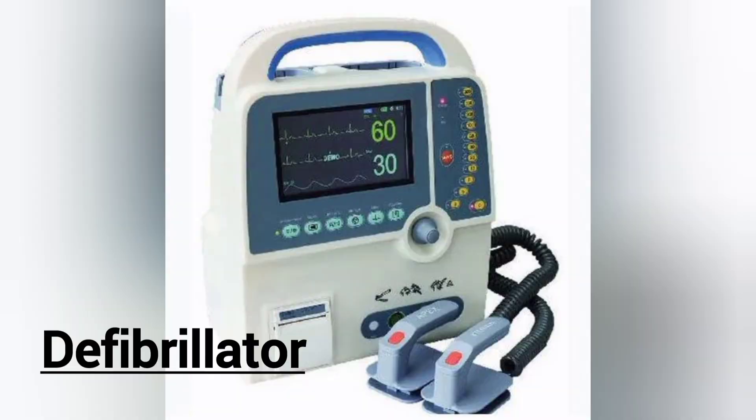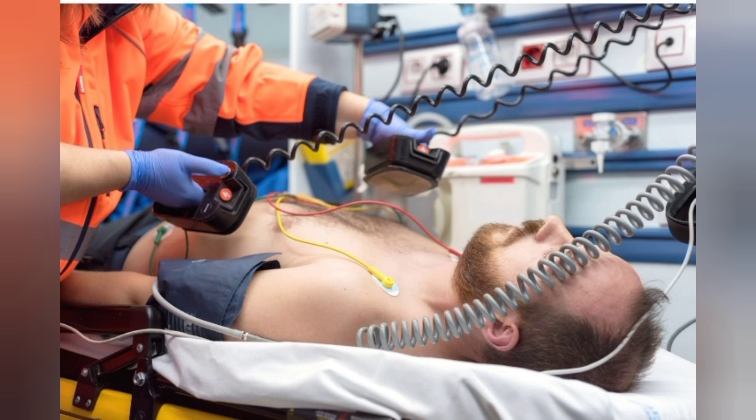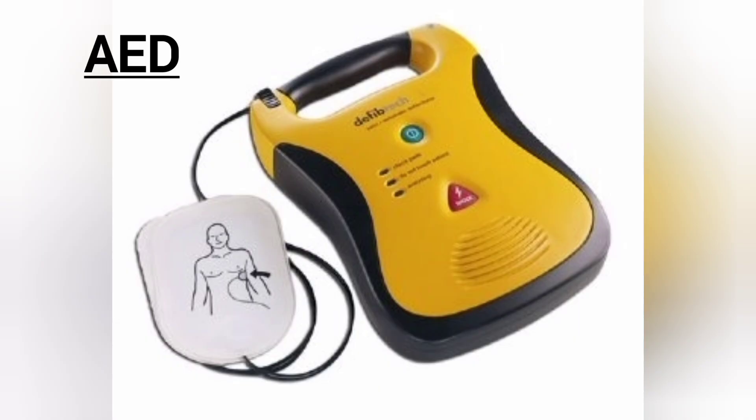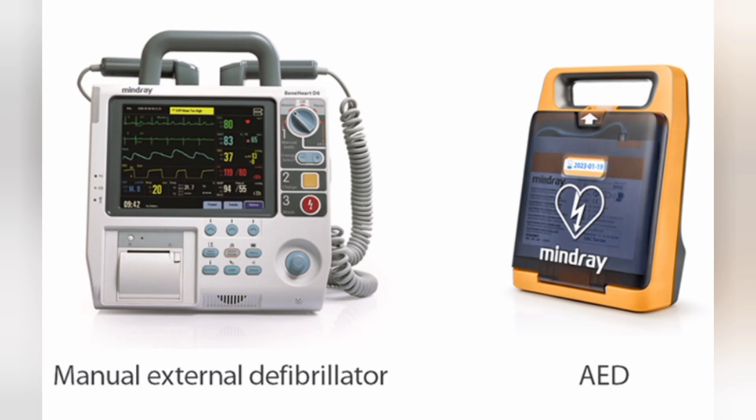Second is defibrillator. Many weak-hearted patients get admitted in ICU. Patients with complications like high BP, kidney failure, trauma, or disturbed metabolism may experience a cardiac arrest. For quick life support, a defibrillator is used to give shock and restore the natural rhythm of the patient's heart. Third is AED — automatic emergency defibrillator. The difference between a defibrillator and AED is that AED can be used by any walk-in person or non-clinical staff.